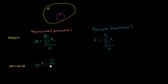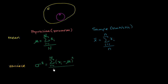How do we denote and calculate variance for a population? For a population, the variance uses the Greek letter sigma squared. You can view it as the mean of the squared distances from the population mean: for each data point i from 1 to N, take that data point, subtract the population mean, square it, and then divide by the total number of data points.